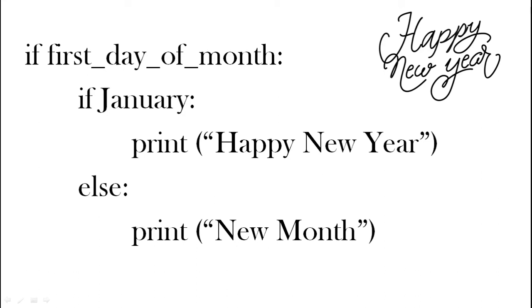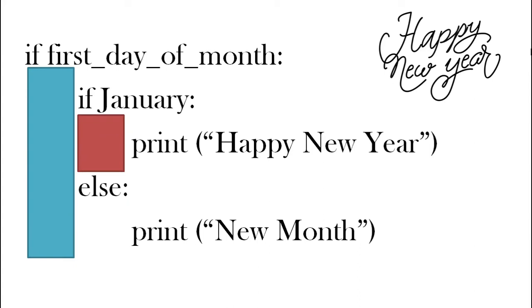The first block shows us the first if statement. All of that underneath is part of that. Then we have the block from the if January, and then we have the block for the else. So we can see which bit belongs to which if statement or else.